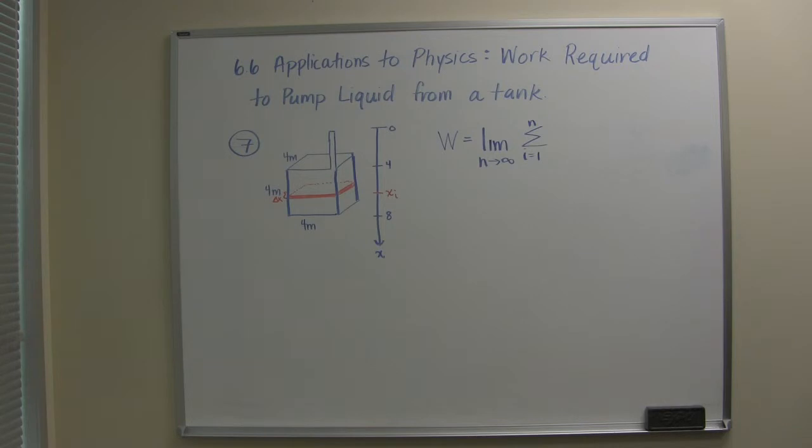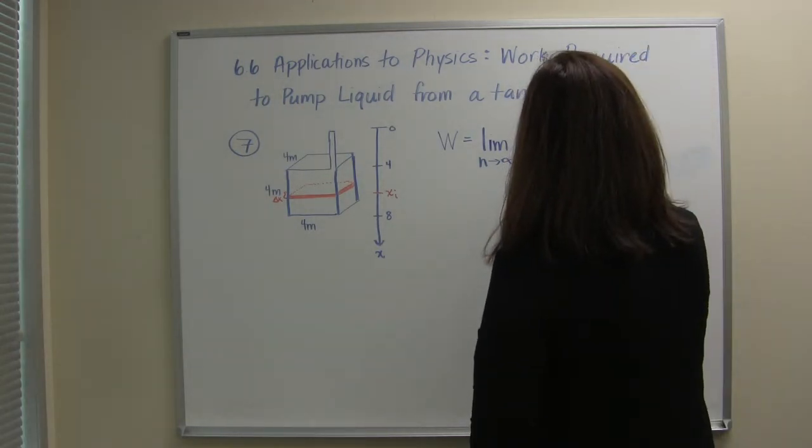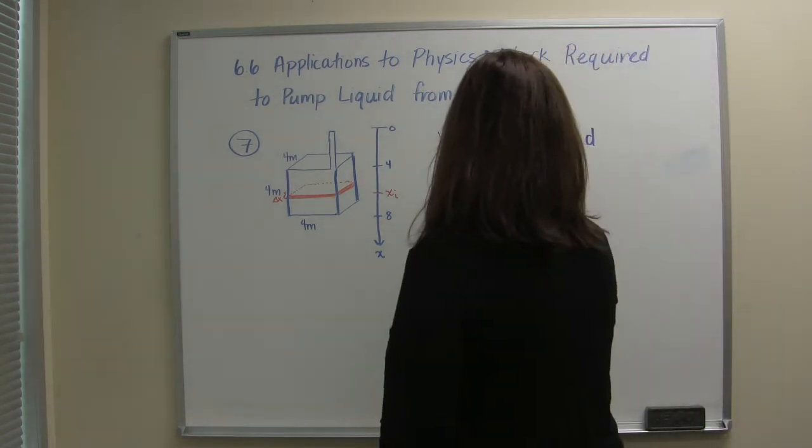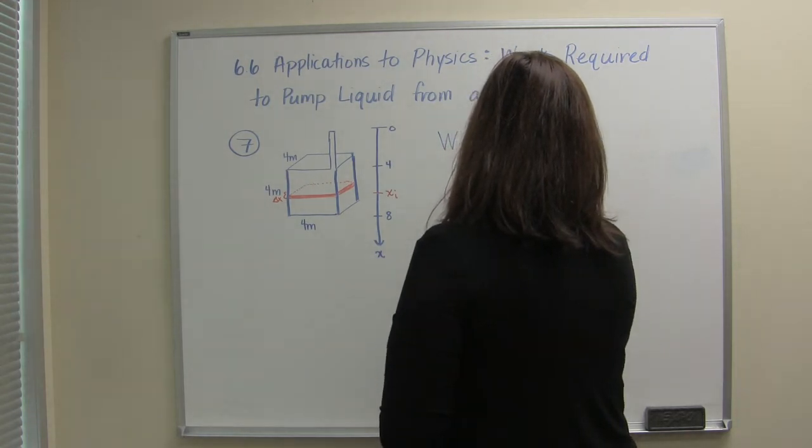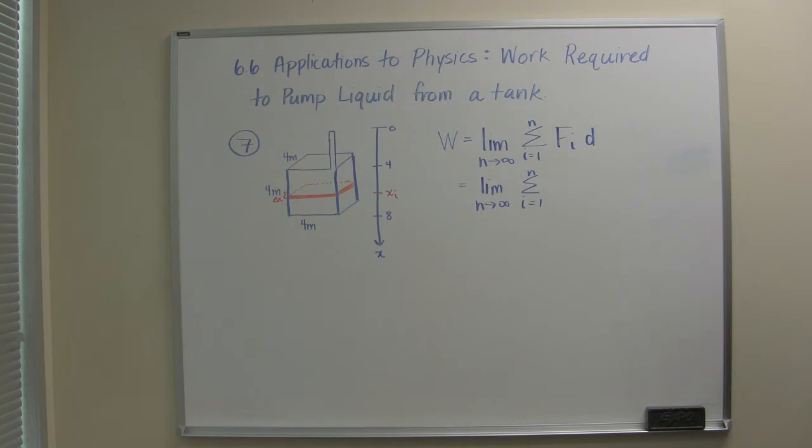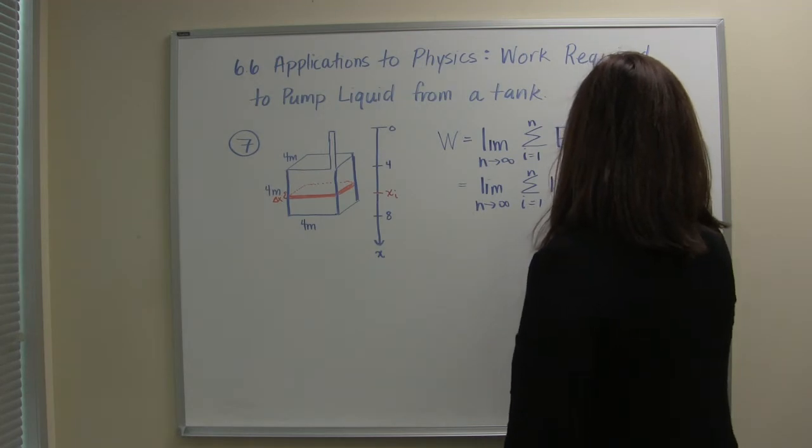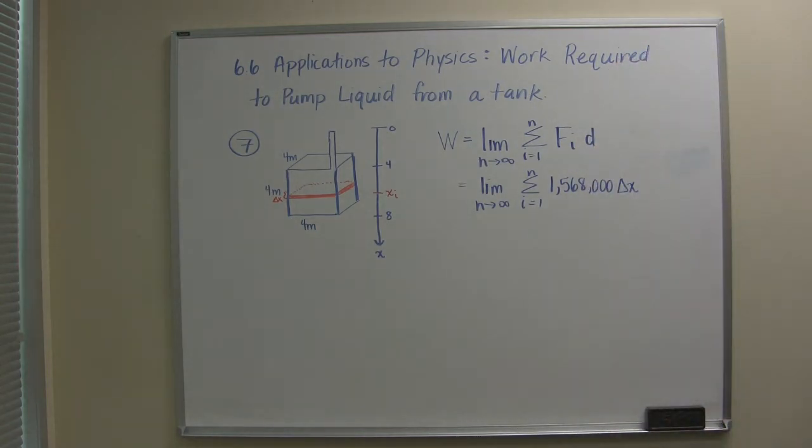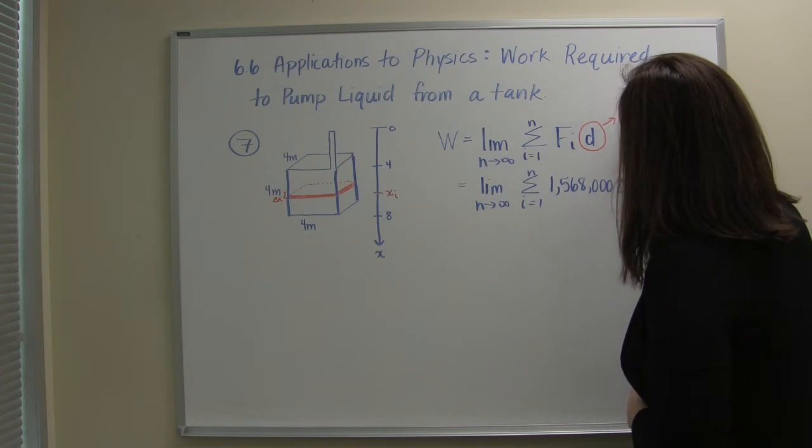So we know that the work involved is really just equal to the force times the distance traveled and so let's plug in what we know from before. Okay so we just calculated the force for one little slice and we said it was 1,568,000 delta x newtons. Let's talk about this distance. So this is the distance that the slice has to travel to get out of the tank.